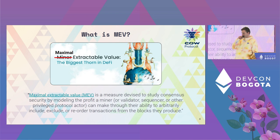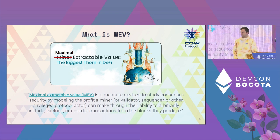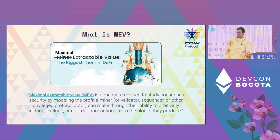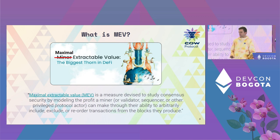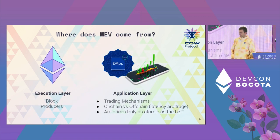Before, block producers - miners - only had one source of revenue, which was gas fees. But with the introduction of MEV-Geth and the boom of DeFi Summer, maximal extractable value became a thing and Ethereum kind of turned in the wrong direction, starting to hurt what makes Ethereum great, which was its users.